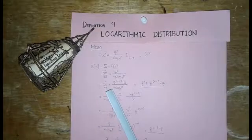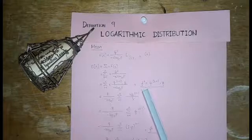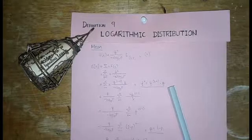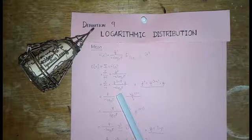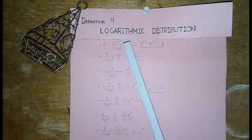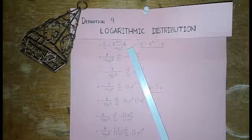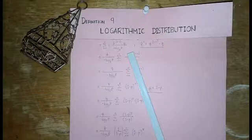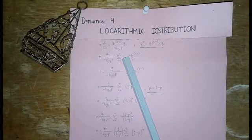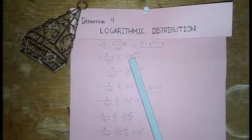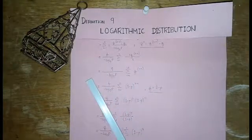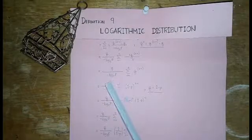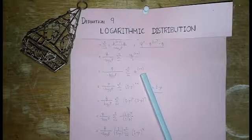Recalling from the power series expansion, we have q^x = q^(x-1) times q. So we now have the summation of x times q^(x-1) times q, all over negative x log(p) base e. From this equation, the constant is q over negative log(p) base e. We extract this constant from the summation to get q over negative log(p) base e, times summation of x times q^(x-1) over x, as x goes from 1 to n. This simplifies to q over negative log(p) base e, times summation of q^(x-1), as x goes from 1 to n.